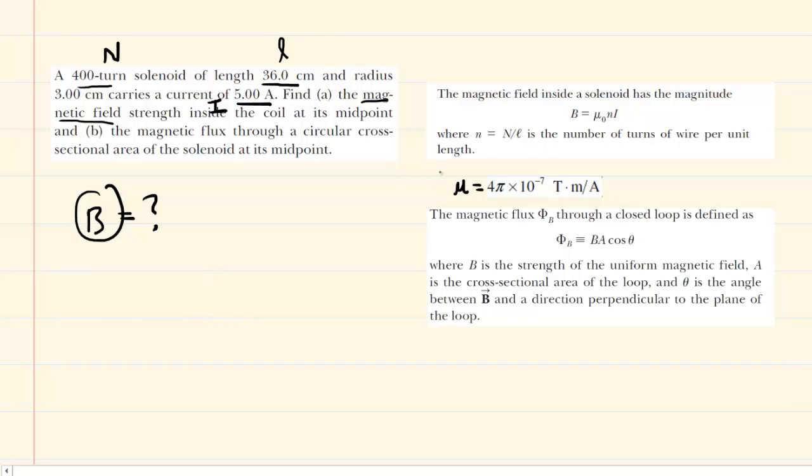It turns out there is such a relationship. We found this in chapter 19, the previous chapter. The magnetic field of a solenoid is equal to a constant value, which we've listed below, multiplied by lowercase n, of which we will speak in just a moment, and multiplied by the current. Lowercase n is simply the number of turns divided by the length of the solenoid.